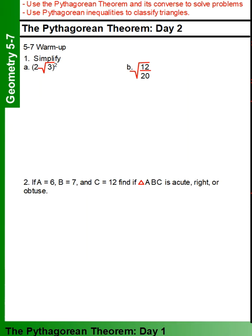All right, so we're going to take a look at reviewing simplest radical form. So we have 2 root 3 squared. So we are squaring it, which means we have 2 root 3 times 2 root 3.